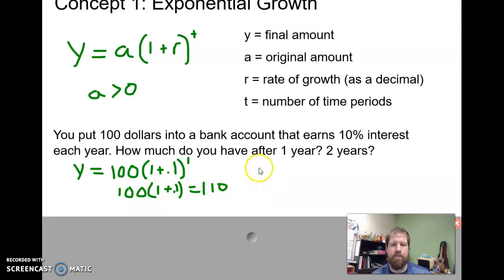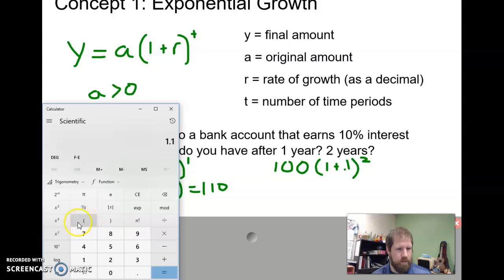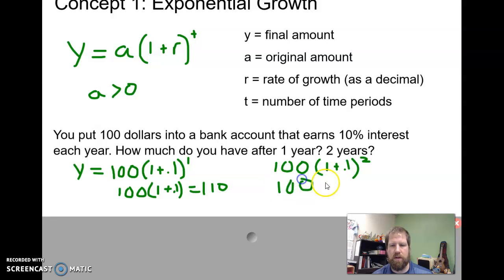So I could go and just plug this in, I've got my $100 still, I've still got my 1 plus 0.1, but now I'm raising it to the second power. So if we do 1.1 squared, we actually get 1.21, and if I have 100, and I multiply that by 1.21, I'm going to get $121. And the reason we have that extra dollar is because when we take 10% of 110, we don't just have that $100 anymore, we have an extra $10, and 10% of that $10 is going to be our extra dollar.